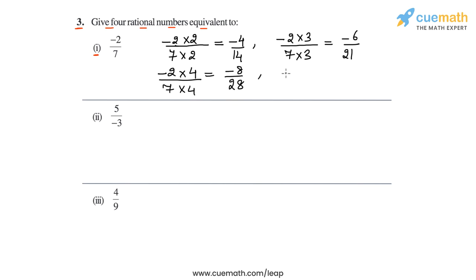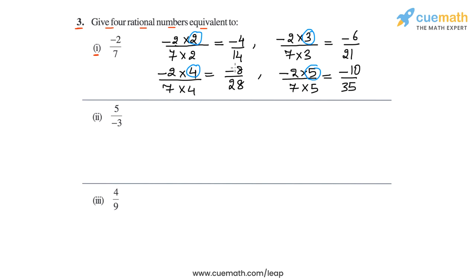And then let me take the multiplier five. So we multiply both numerator and denominator of minus two by seven with five, and this will give us minus 10 by 35. You can take any non-zero integer multiplier and that will give you an equivalent rational number. So the four equivalent rational numbers we have obtained for minus two by seven are minus four by 14, minus six by 21, minus eight by 28, and minus 10 by 35. This completes part one.